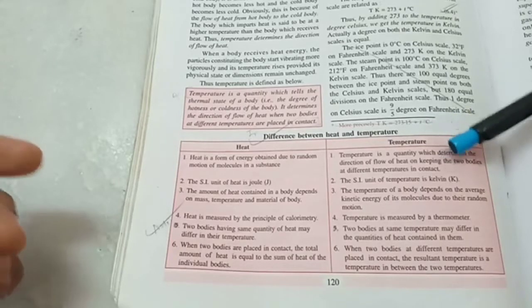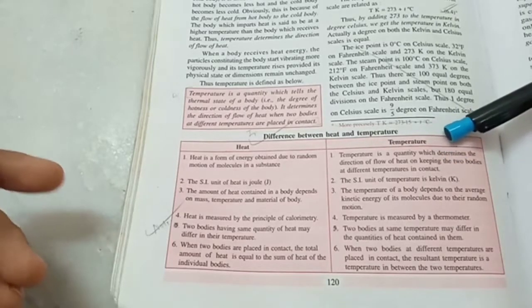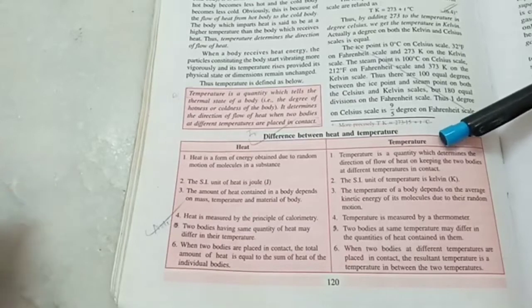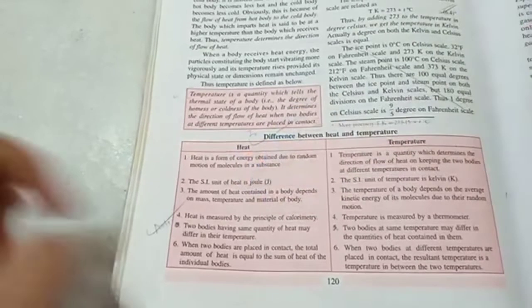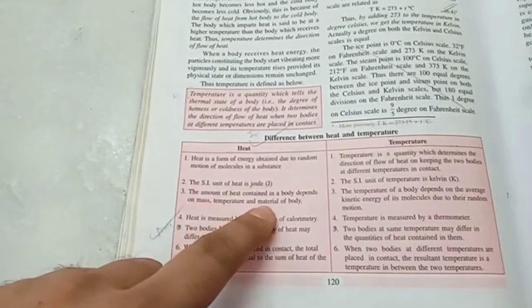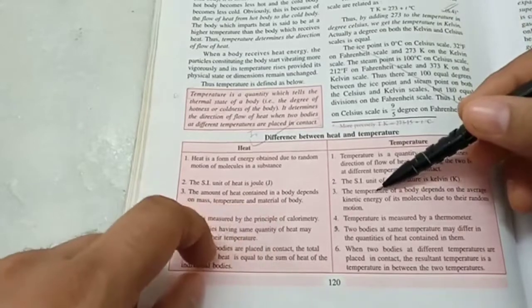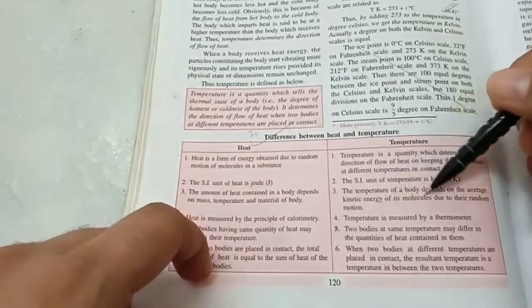It simply helps us to determine, in what direction will heat flow? Because heat always flows from a body at a higher temperature to a body at a lower temperature. The amount of heat depends on temperature, but it also depends on two more things, mass and the material of the body. Temperature, on the other hand, is simply the average kinetic energy of its molecules.